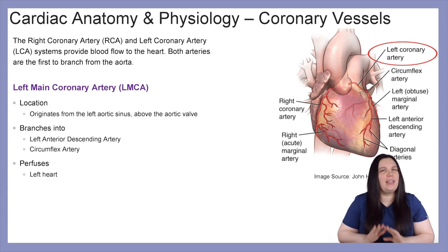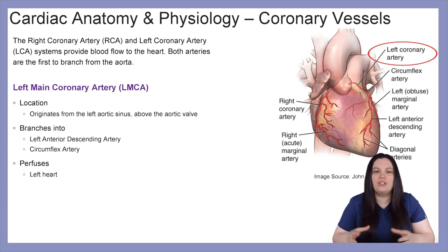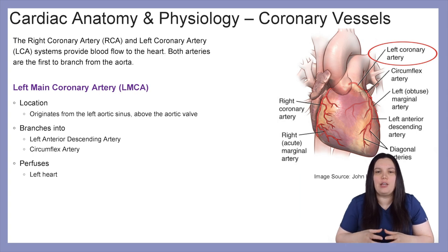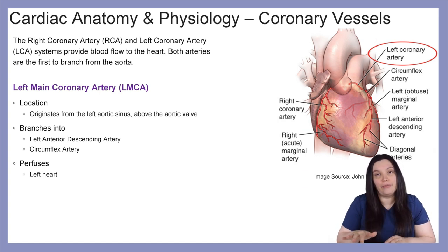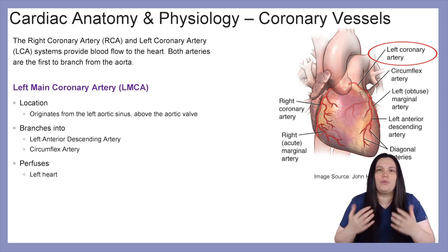Let's begin by looking at our LMCA — that's our left main coronary artery. Its location: it's going to originate from the left aortic sinus above the aortic valve. It branches into our left anterior descending artery and our circumflex artery, and primarily it perfuses the left side of the heart.